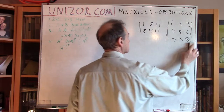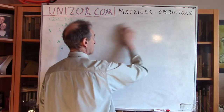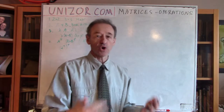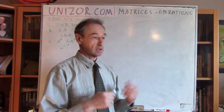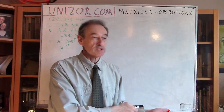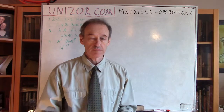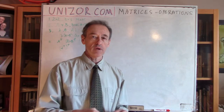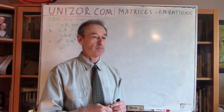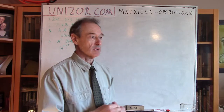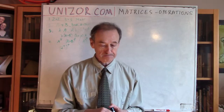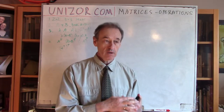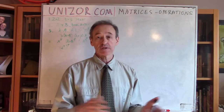Obviously, matrices can be of any dimension. A matrix is a table, so the table can have a certain number of rows and a certain number of columns — it can be different, for instance 25 rows by 75 columns. We will probably spend a little less time on these abstract matrices and spend more time on square matrices of 2x2 and 3x3 size. However, the operations we are talking about today are applicable to all matrices of any dimension.